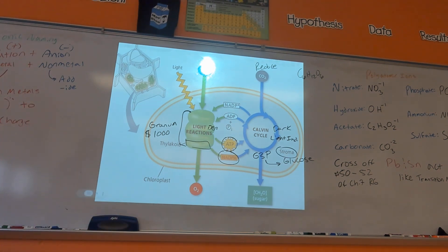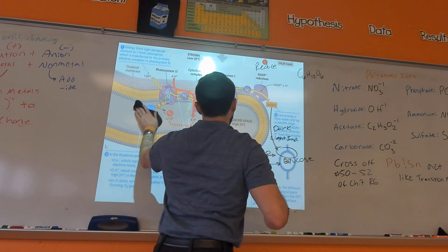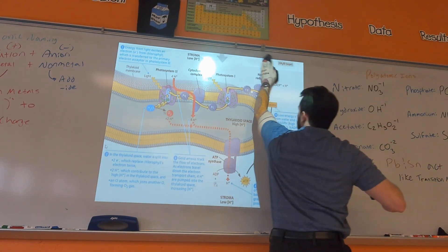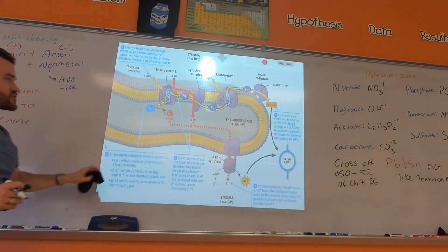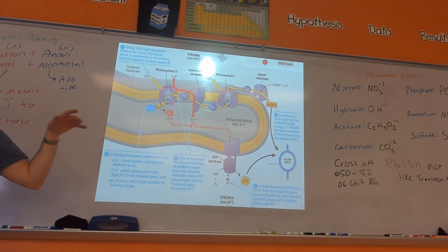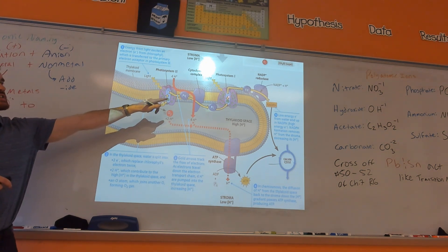Let's go over the light reactions. There are two photosystems: Photosystem 2 and Photosystem 1. Photosystem 1 was actually discovered before Photosystem 2, but then they realized that Photosystem 2 happens first in the process. That's why the order is a bit confusing.